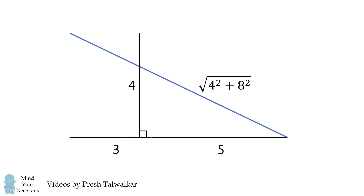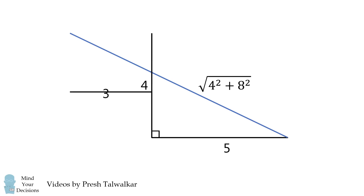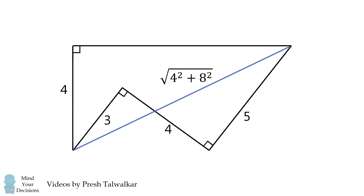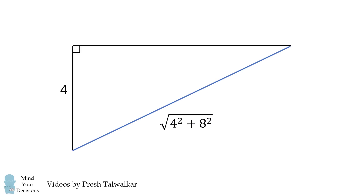So now let's go back to our original diagram. We know this is the same distance from endpoint to endpoint, and we're going to bring it back to our unusual shape. Now let's just focus on this right triangle. What is the value of X in this right triangle? Well, we know that the length of the hypotenuse will be the square root of 4 squared plus X squared, and it's also equal to the square root of 4 squared plus 8 squared. Therefore, X is equal to 8, and that's our answer.